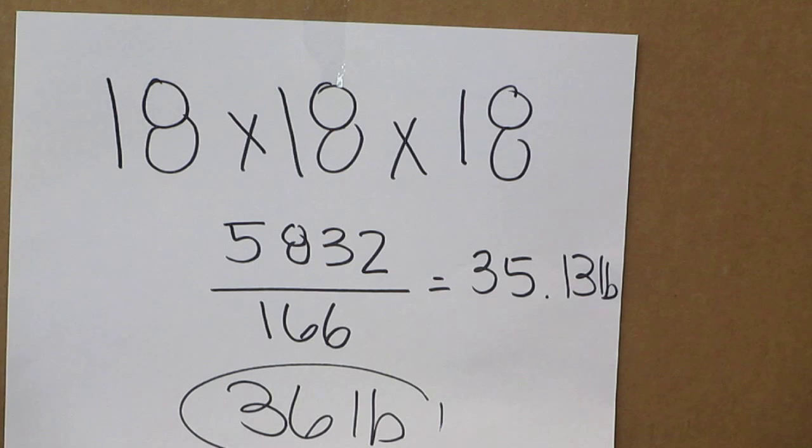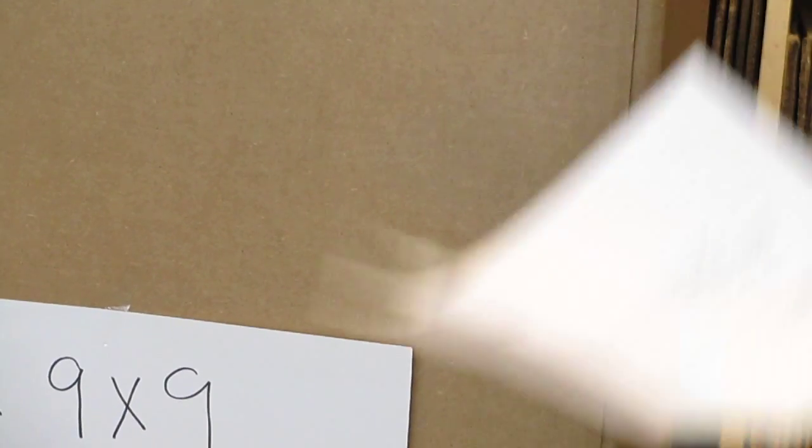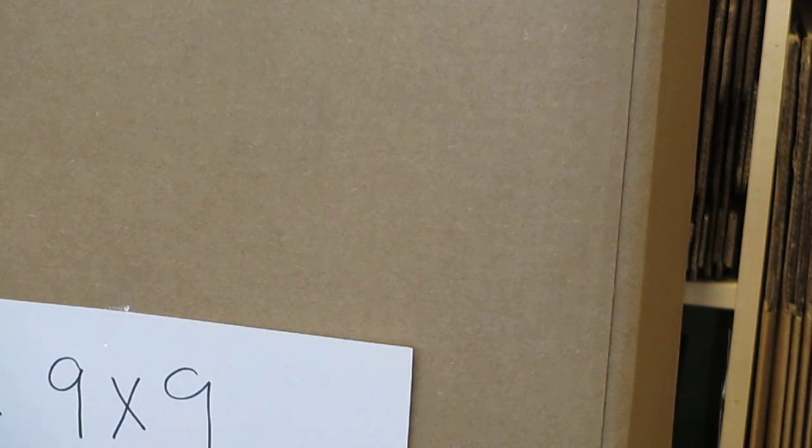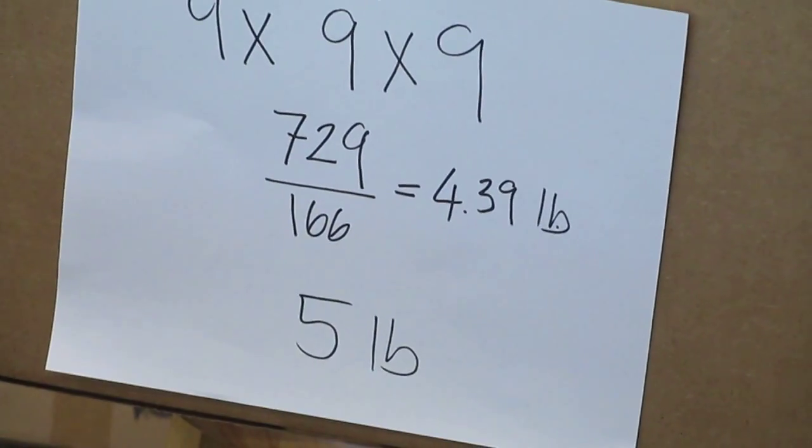So if you have a box 18 by 18 by 18, make sure you have at least 30 pounds. If not, you have to reduce it. Like I have another example here: the same box, if we make it 9 by 9 by 9, half of it, you will get charged five pounds.